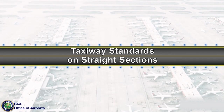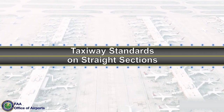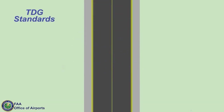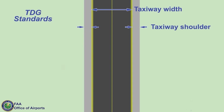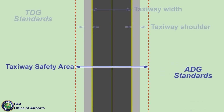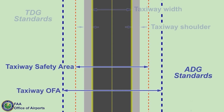For taxiway dimensions on straight taxiway sections, standards based on TDG include the taxiway width and the taxiway shoulder width, while standards based on ADG include the taxiway safety area and taxiway OFA.